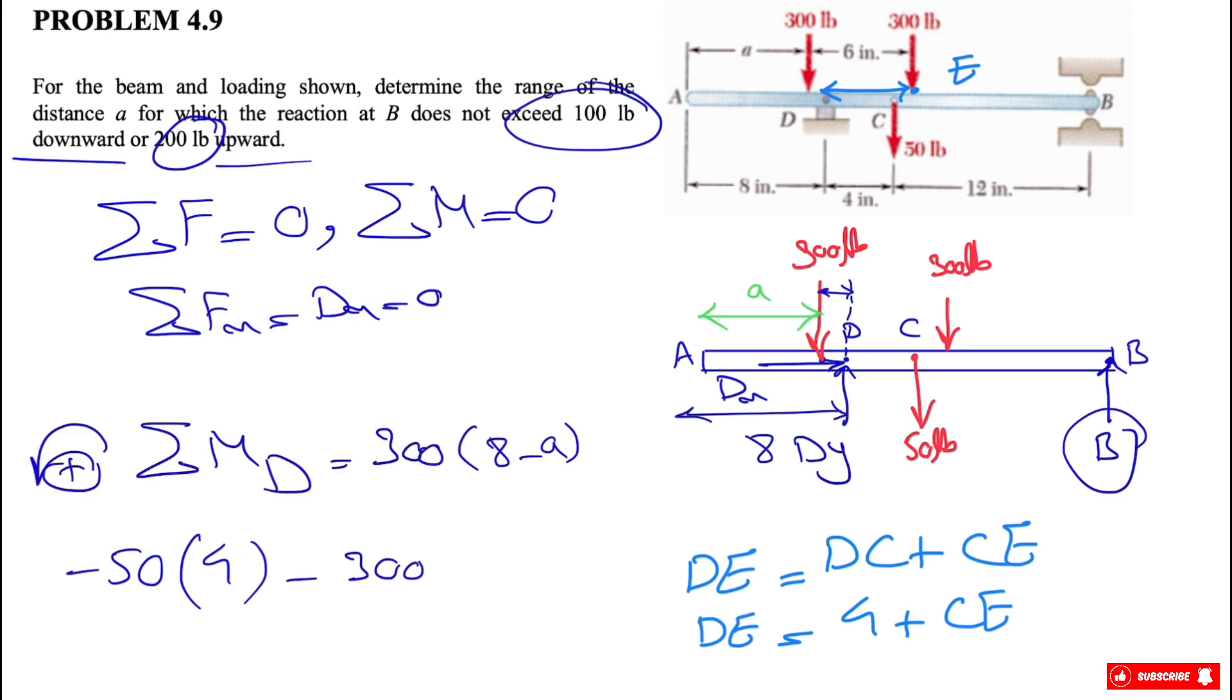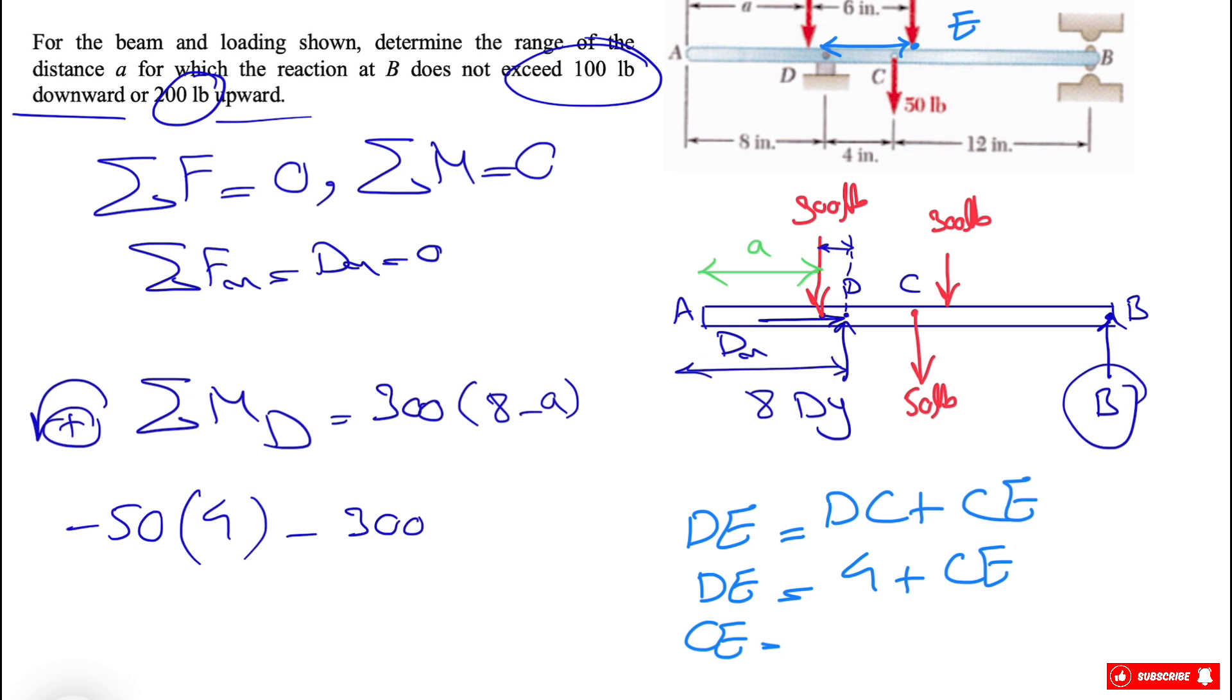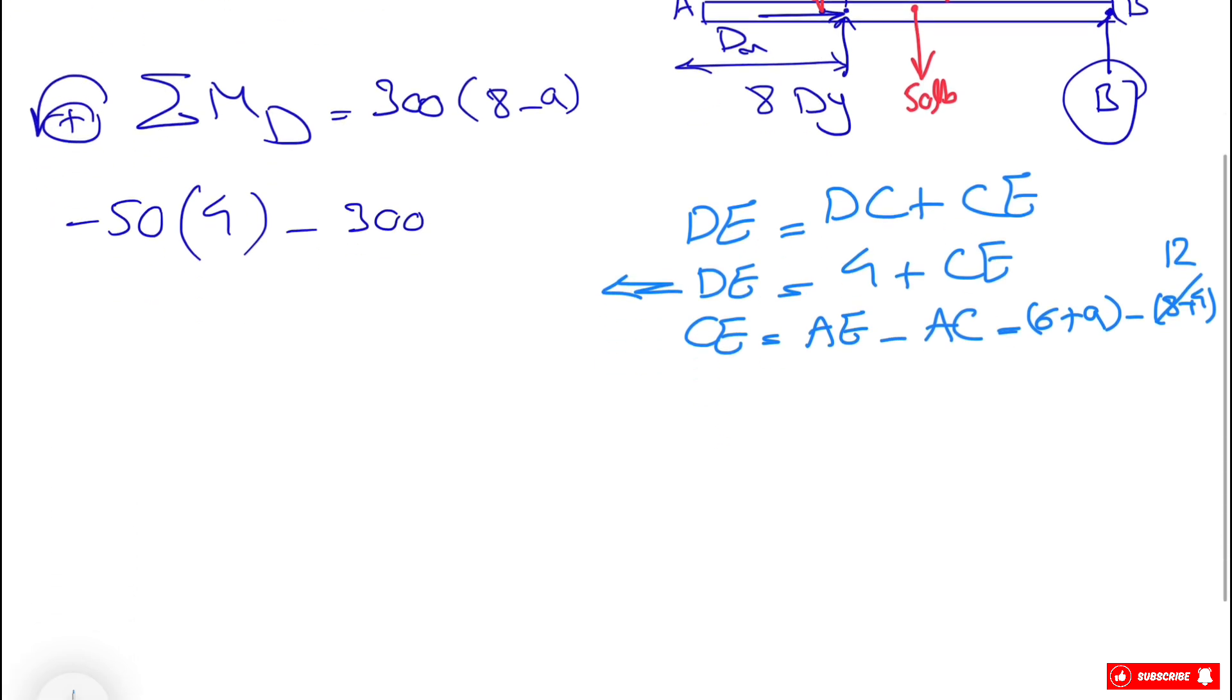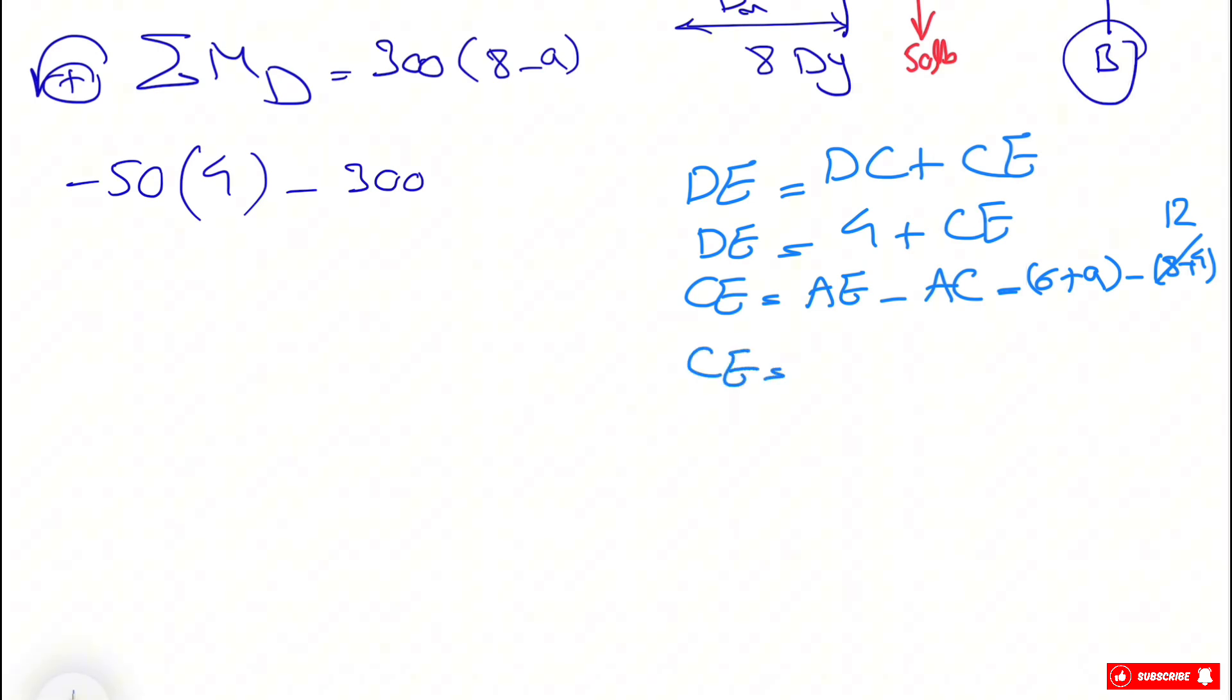If we want to find CE, we know CE is equal to AE minus AC. So AE we know is 6 plus a, and AC is simply 8 plus 4, which is 12. So from here, CE will be 6 minus 12 plus a, or a minus 6. And now that we have CE, we know our DE is 4 plus CE, which is a minus 6, and this will be a minus 2.